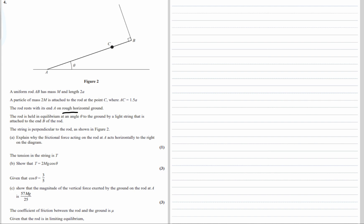Let's start drawing our forces on. At C we have a particle of mass 2m, so that's 2mg, its weight. The rod is a uniform rod, which means its weight acts down the center of it, and it's got mass m, so weight mg. We have a tension force at B. We're going to have a normal reaction at A, and we're going to have rough ground so friction opposing the motion, acting where the rod touches the ground.